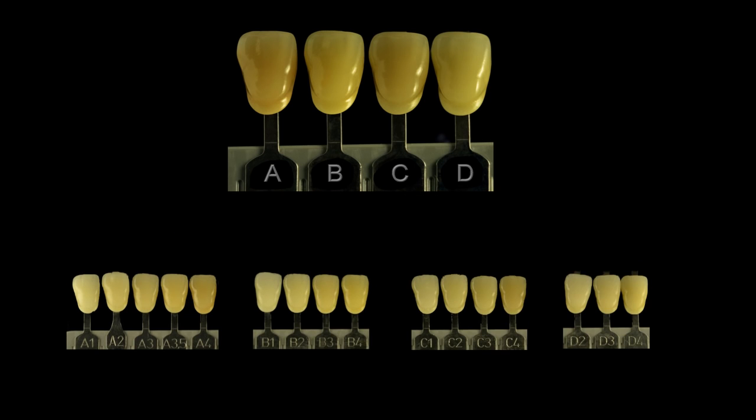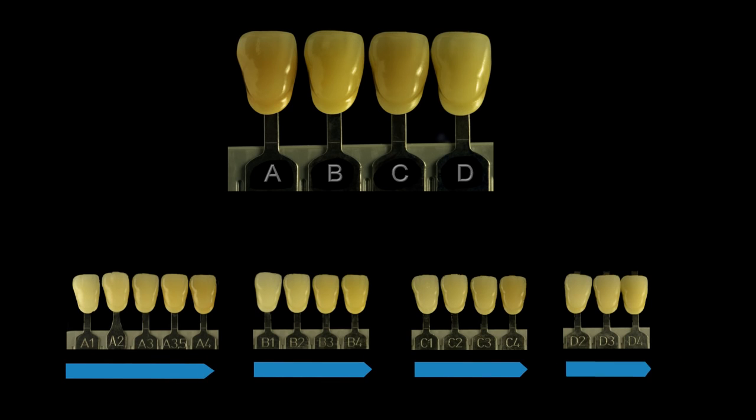Each group is subdivided according to chroma and value. The higher the number, the more chroma the Shade Tab has. The lower the number, the higher the value of the Shade Tab and the brighter it appears.